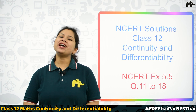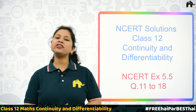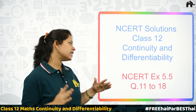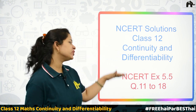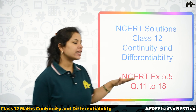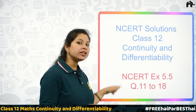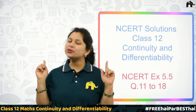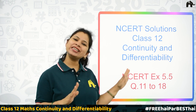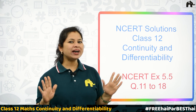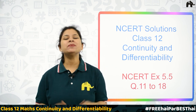Hello everyone! Today we will be doing NCERT Solution of Grade 12 Chapter 5 — Continuity and Differentiability — and today we are doing Exercise 5.5, questions 11 to 18. With this we will be finished with this exercise. All the questions from previous exercises we have done in the last video, so please refer to those. So let's get ready with your pen and paper so that we can all solve together.